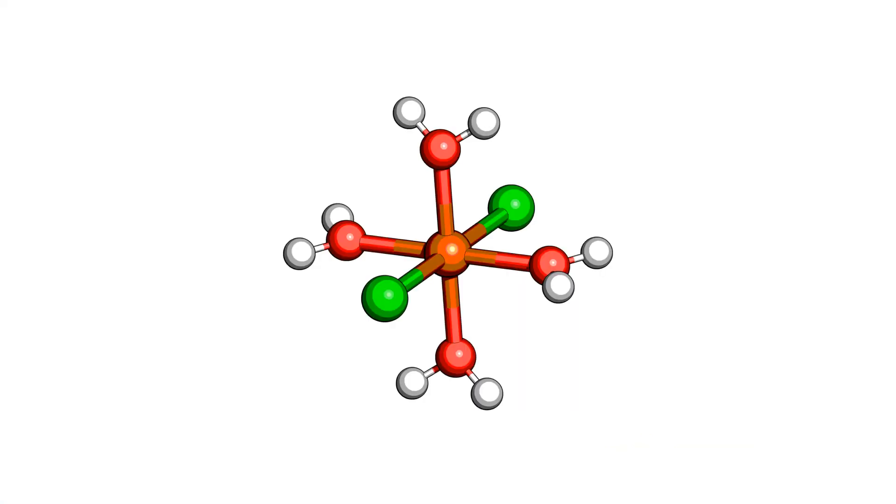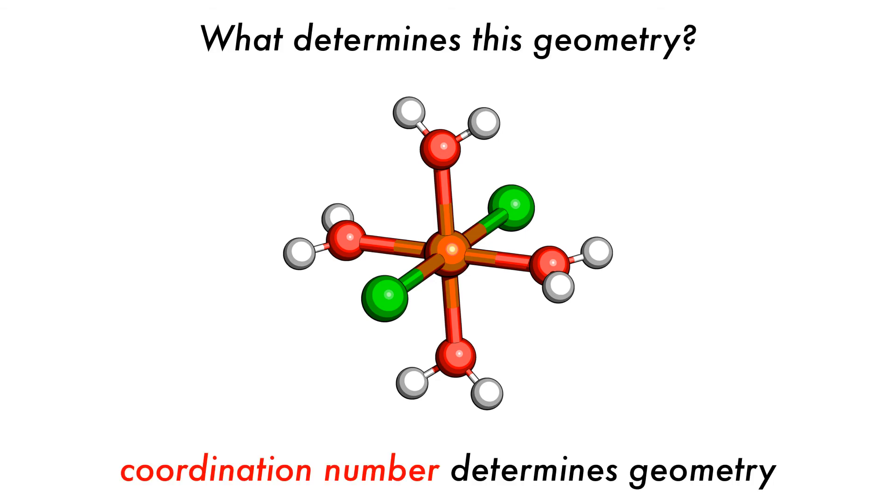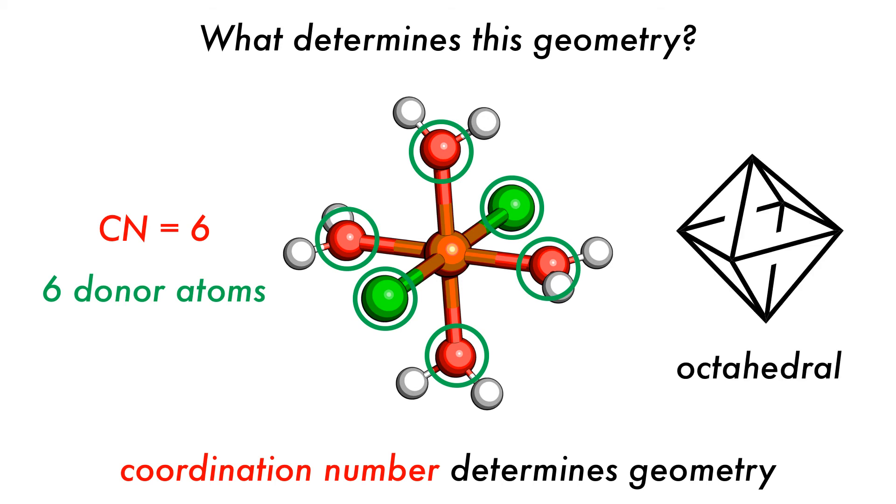We will often see shapes like this in coordination chemistry, but what determines this shape? Geometry is in fact determined by coordination number. Here the coordination number is six, because there are six donor atoms, dative covalently bonded to the central atom. This is an octahedral shape.